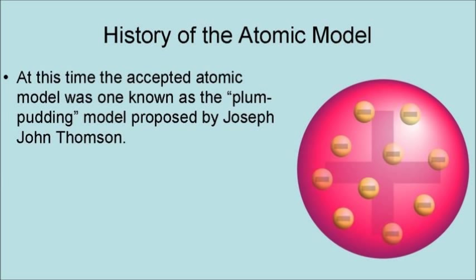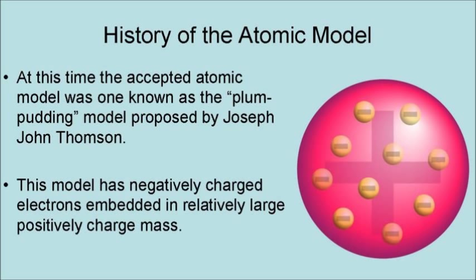At this time, the accepted atomic model was one known as the Plum-Pudding model, proposed by Joseph John Thompson. This model has negatively charged electrons embedded in a relatively large positively charged mass.